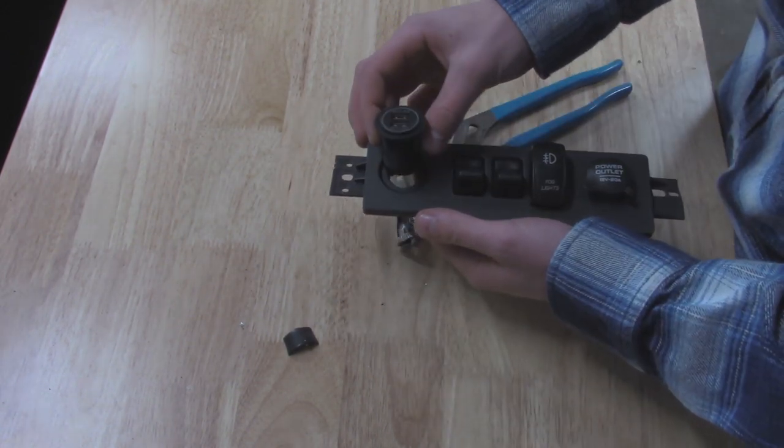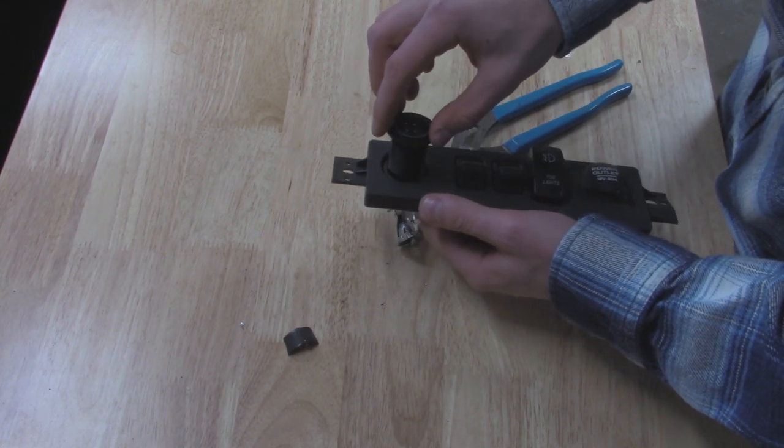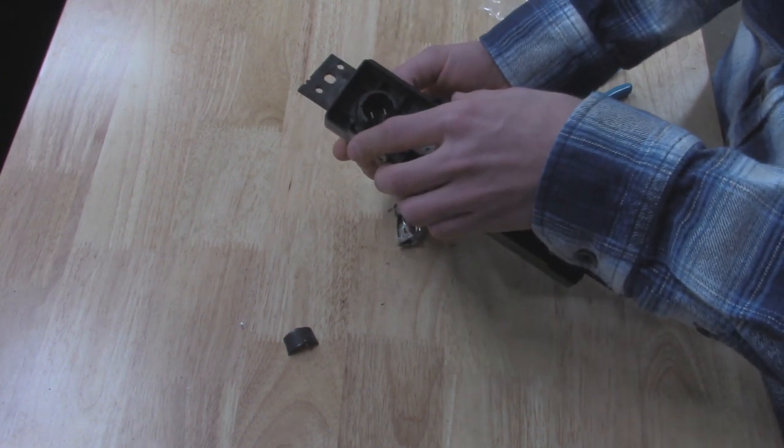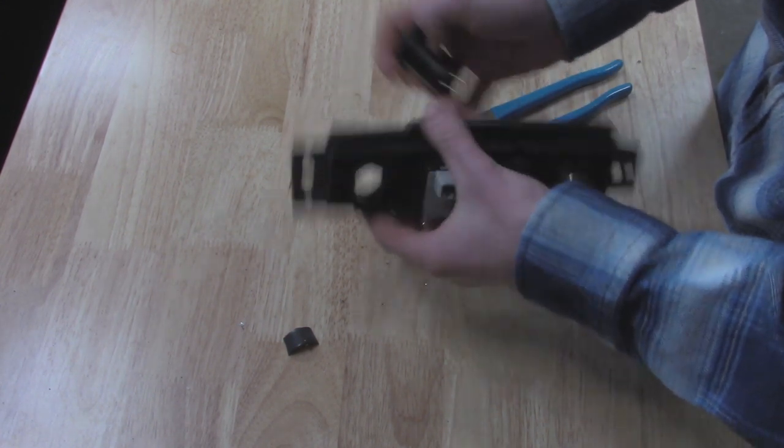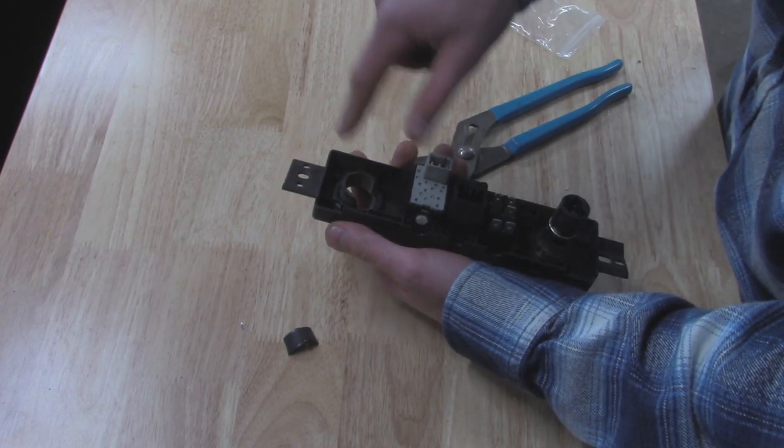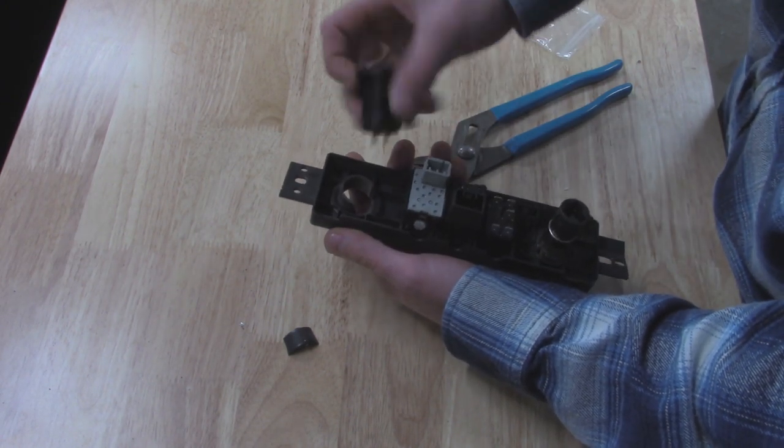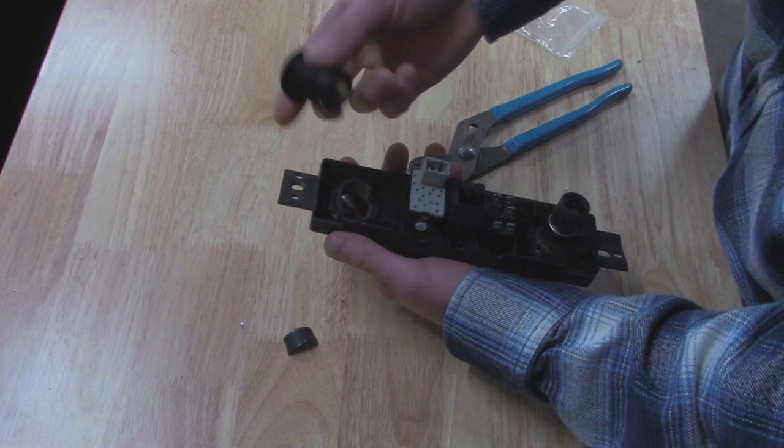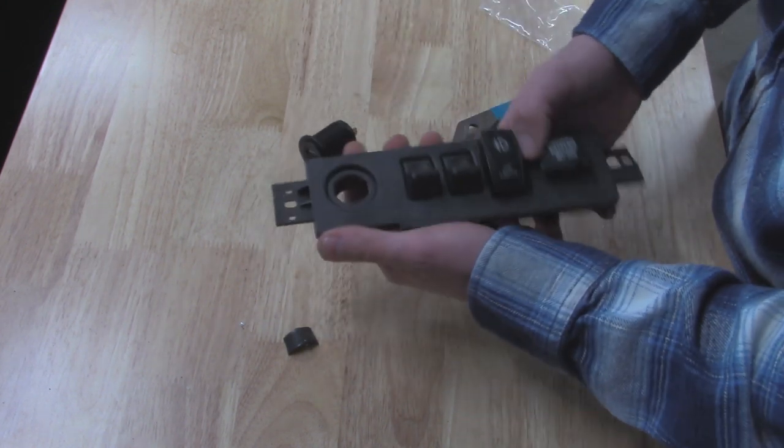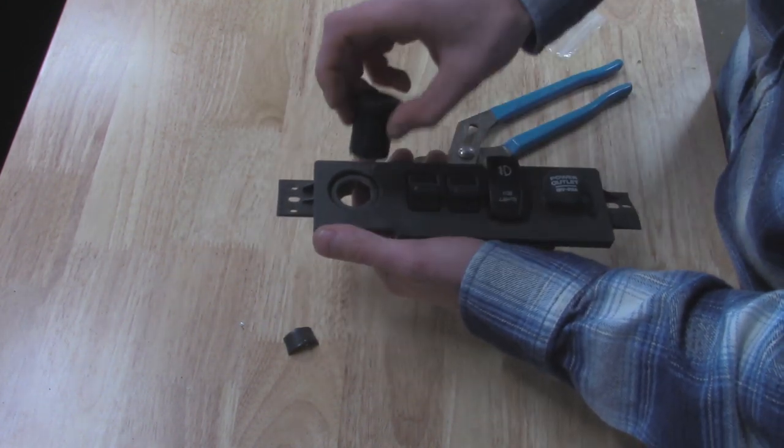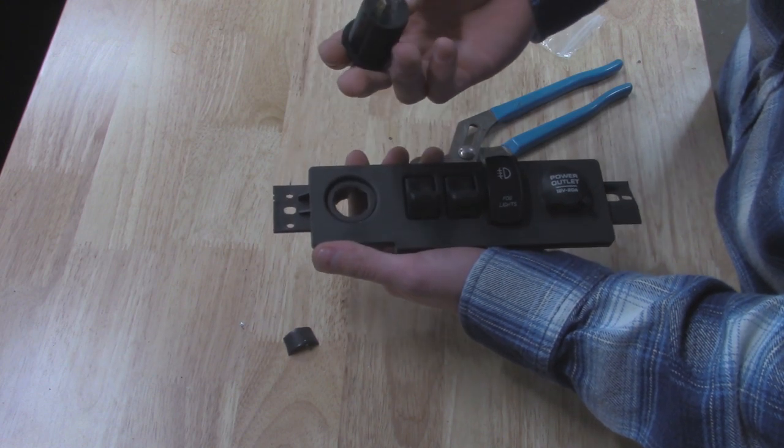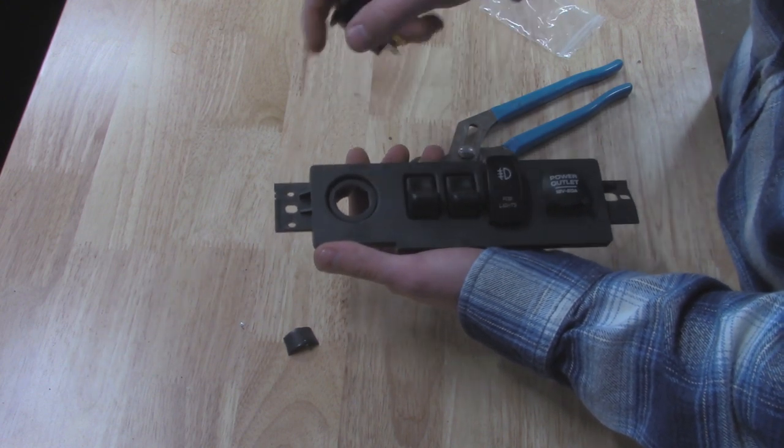All right, so if we take our new USB port and we put it over, you can see that there is some material we're going to file out. On the back side they have this plastic little ring and we're going to completely remove that because the diameter is smaller than what's on here. And then basically yeah we're just going to be filing this out until it fits or if you have a perfectly sized hole saw you can always use that too.